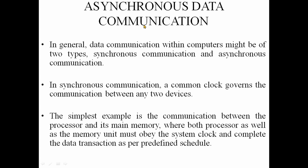We will discuss two types of communication: synchronous communication and asynchronous communication. Data communication within the computer might be of these two types. Synchronous communication is governed by a common clock. For example, communication between the processor and its main memory — the processor as well as the memory unit must obey the system clock and complete the data transaction as per a predefined schedule.